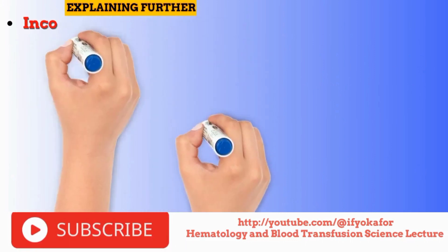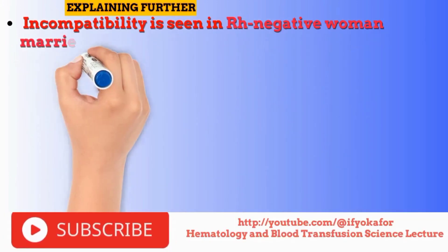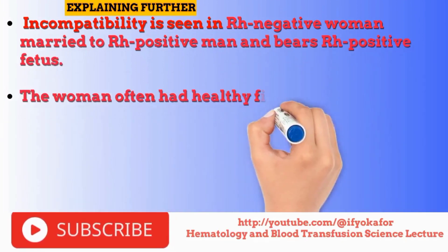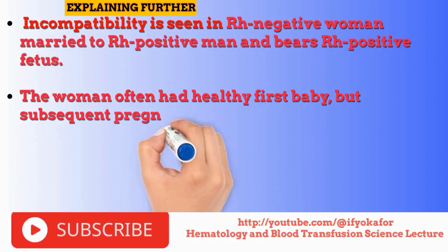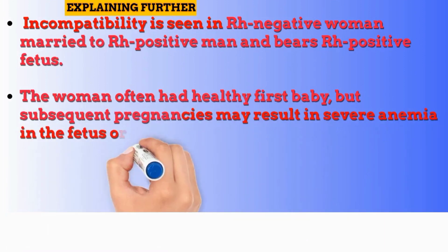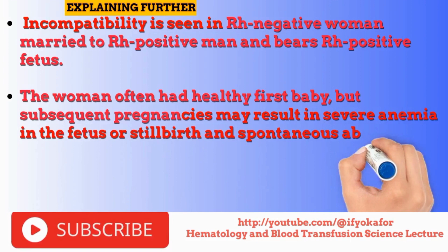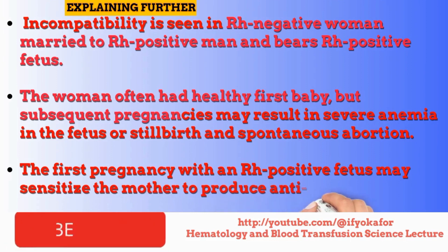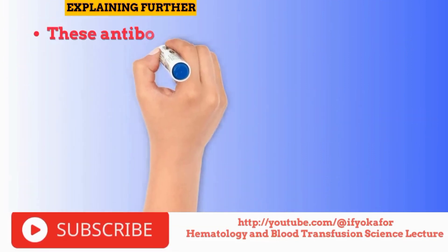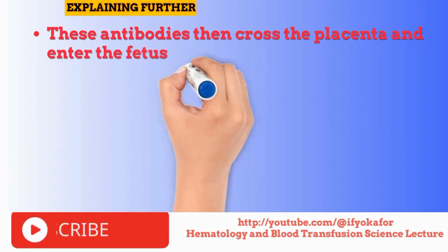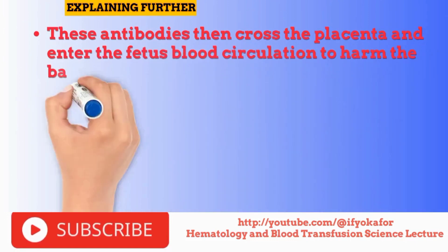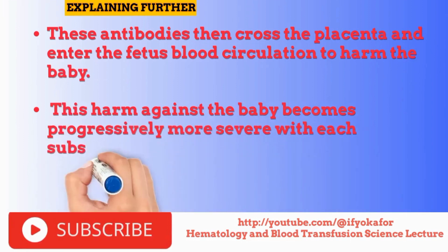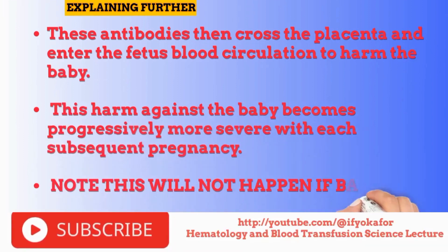Explaining further, incompatibility is seen in an ROH negative woman married to an ROH positive man who bears an ROH positive fetus. The woman often has an easy first baby, but subsequent pregnancies may result in severe anemia in the fetus, stillbirth, or spontaneous abortion. The first pregnancy with an ROH positive fetus may sensitize the mother to produce anti-D. This antibody then crosses the placenta and enters the fetus's blood circulation to harm the baby. This harm against the baby becomes progressively worse with subsequent pregnancies. Note, this will not happen if the baby is ROH negative.